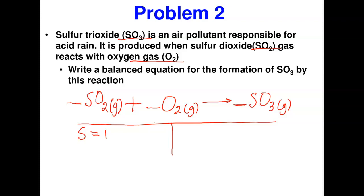Sulfur is 1 = 1, balanced. Oxygen: 4 on the left and 3 on the right. I think algebraically — if I multiply SO₃ by 2, I get 6 oxygen on the right. And if I multiply the left-side oxygen: 2 × 2 = 4, plus 2 from SO₂ gives me enough oxygen. I add a coefficient of 2 in front of SO₃, giving 6 oxygen on the right. But now sulfur is messed up — I have 2 sulfur on the right.